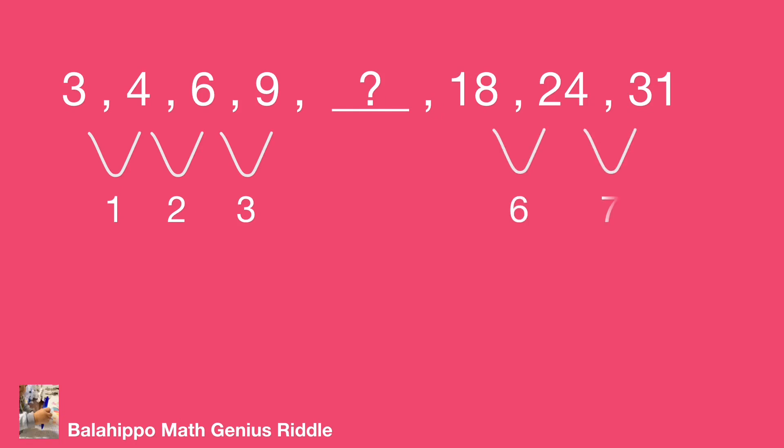18 plus 6 equal to 24, 24 plus 7 equal to 31. Adopt these rules.